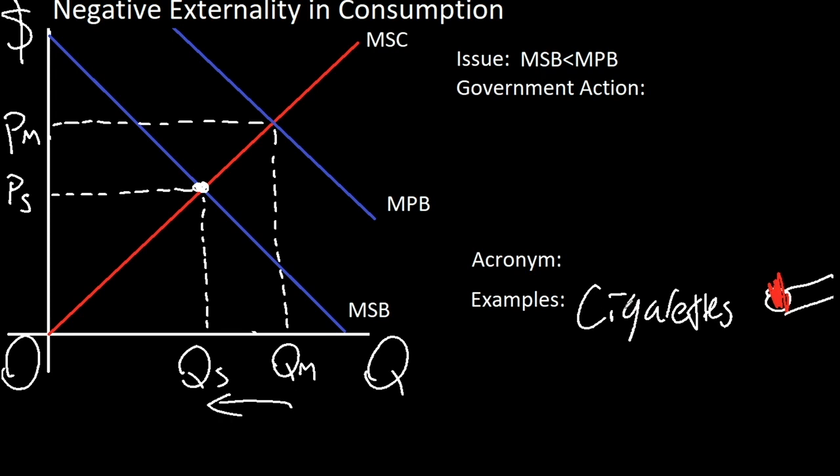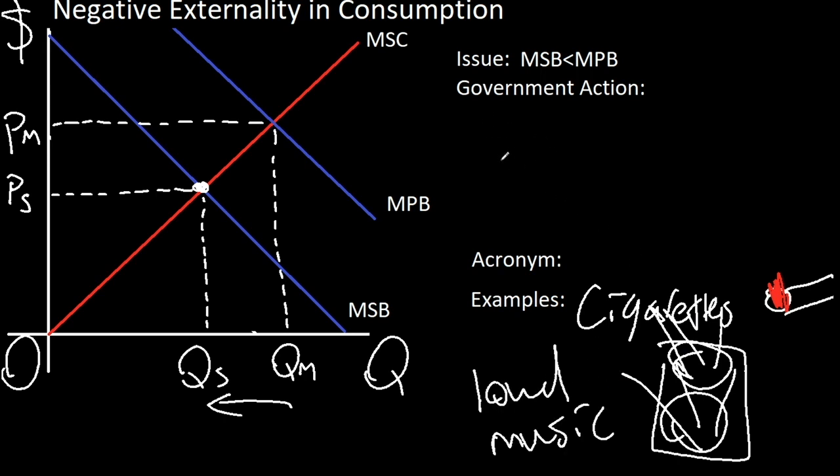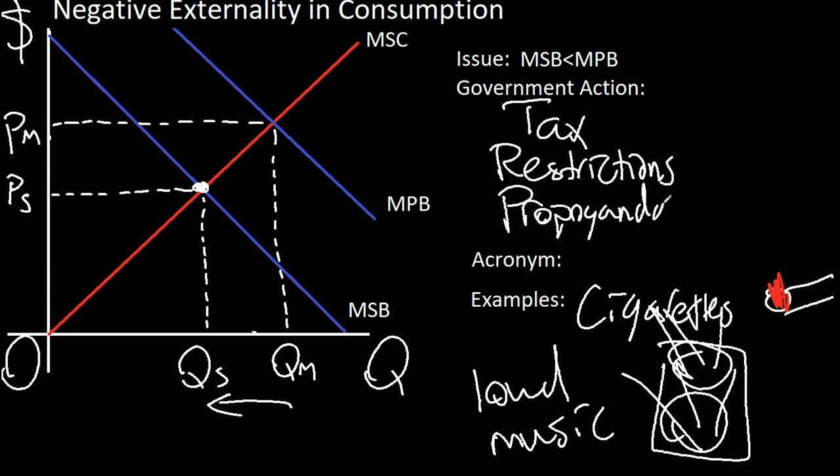Another is playing loud music at night as you're disturbing other neighbors sleep for your own benefit. The government can do a lot to fix this, again by taxing the good or consumers for purchasing it, imposing restrictions, creating propaganda such as how on all those boxes they say smoking kills. And then they have like some disturbing photo that will traumatize you for the rest of your life. And the last thing they can do is just straight up outright ban the good from the market.